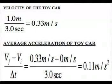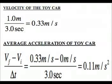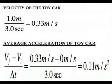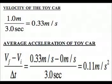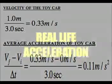The average acceleration is the difference in final and initial velocity divided by change in time. Final velocity was calculated as 0.33 meters per second. Initial velocity is 0 meters per second because the car started at rest. Total change in time is 3 seconds. Therefore, average acceleration of the toy car is 0.11 meters per second squared.